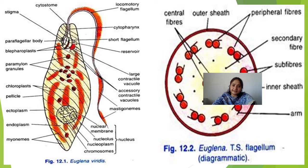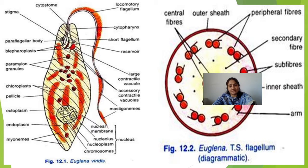Contractile vacuoles are present at the anterior end near the cytopharynx. There is a large contractile vacuole and several small accessory contractile vacuoles. The presence of contractile vacuoles is related to osmoregulation. Because the animal lives in freshwater, contractile vacuoles maintain the internal concentration of the body.